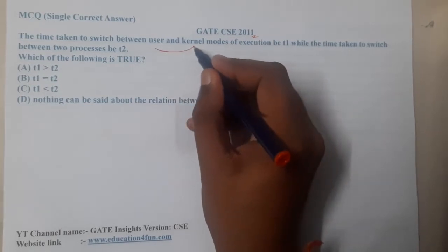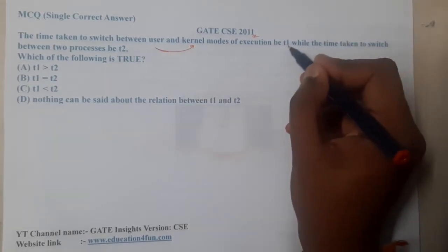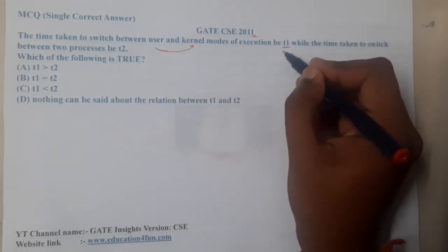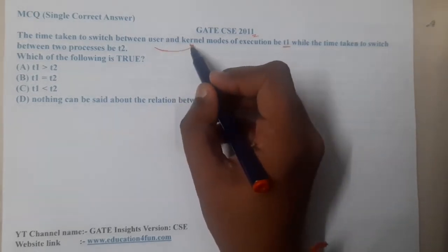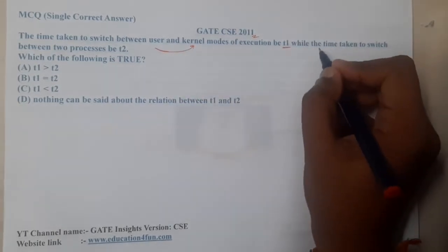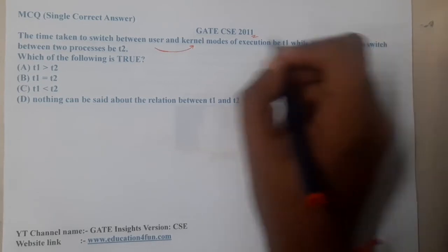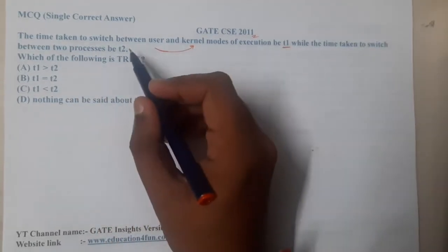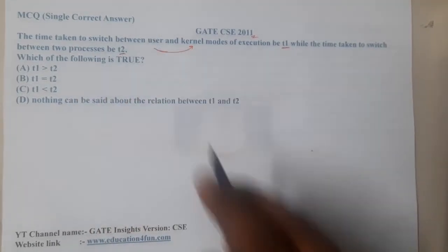The time to switch from user mode to kernel mode is t1. While the time taken to switch between two processes is t2.